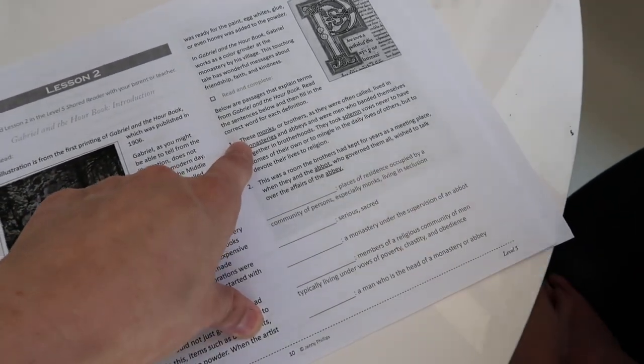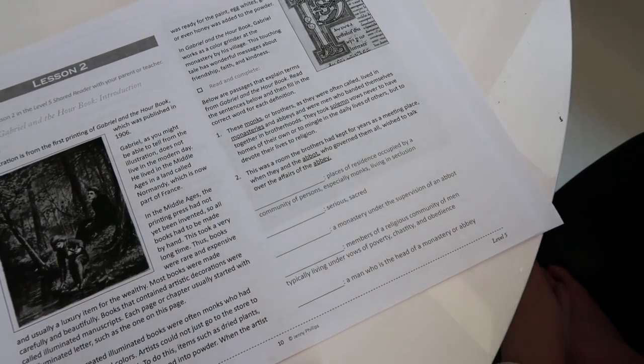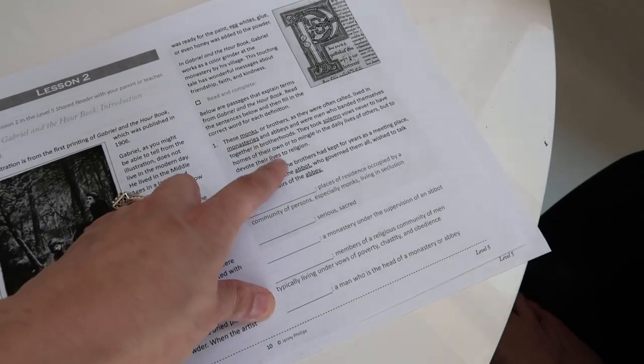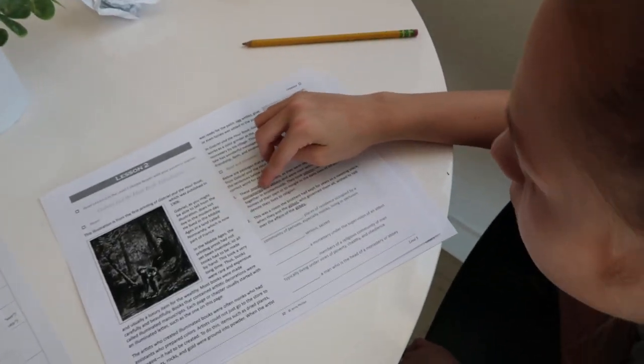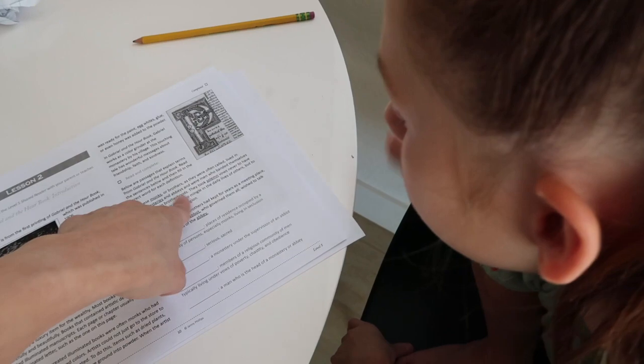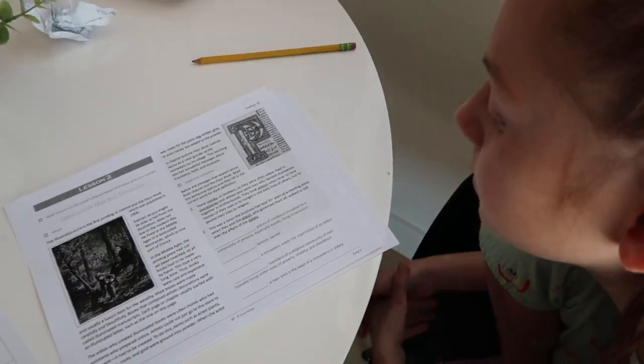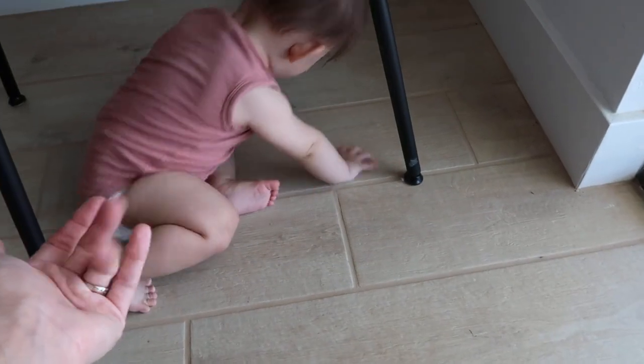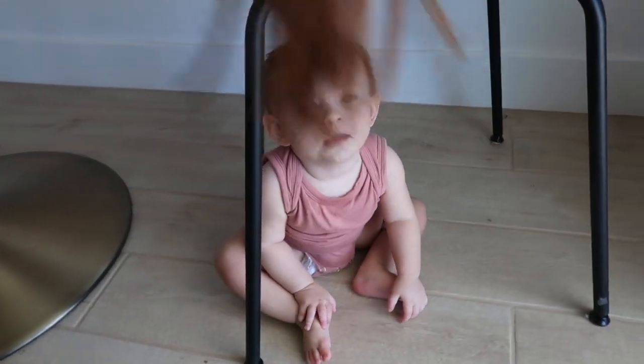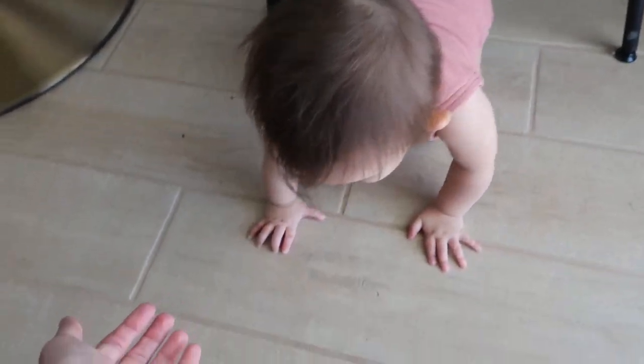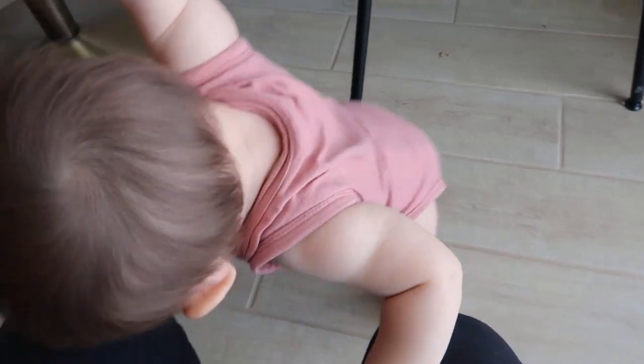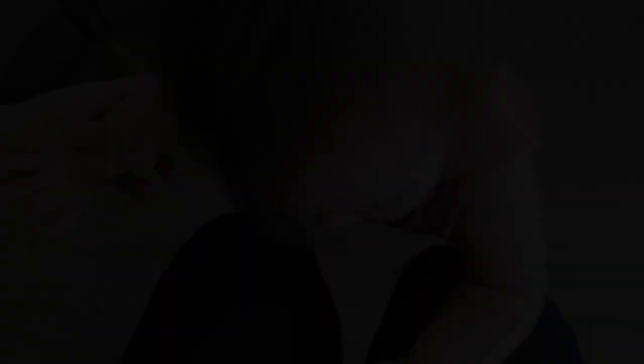Read the sentences below and fill in the correct word for each definition. So these monks are brothers, as they were often called, lived in monasteries. So these underlined words would go in one. Yes, and it tells you the definitions in here. Okay. All right, Brave. You ready? I probably got to give you a nap. Brave. Come on. We got to go take a nap.